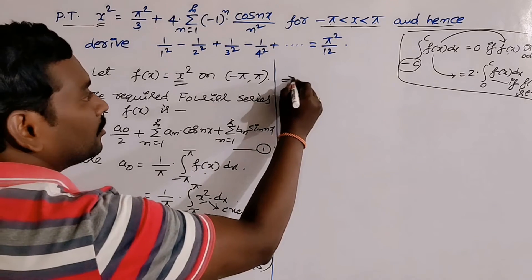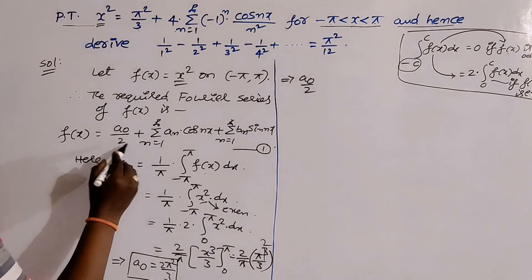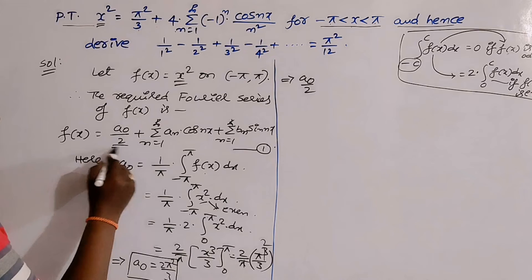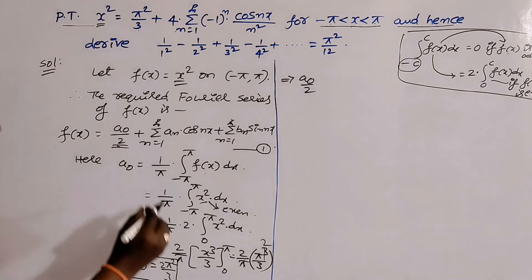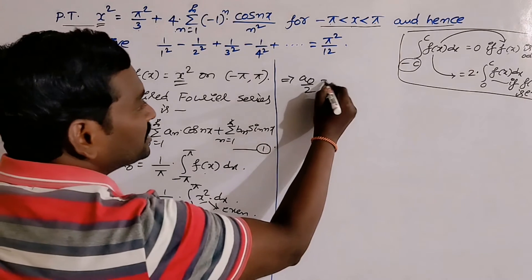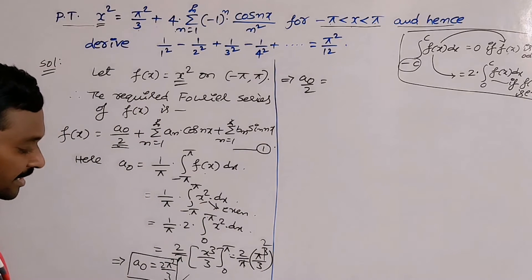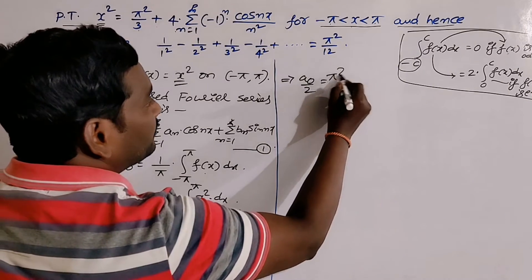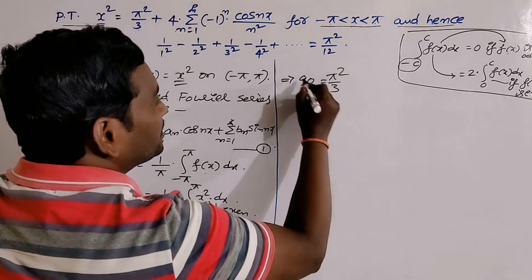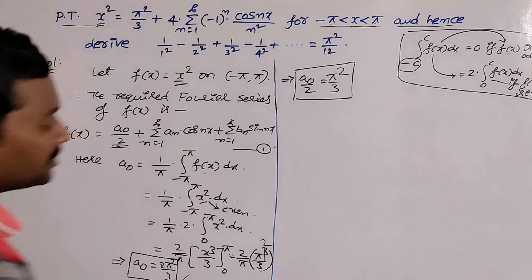From this, a₀/2 = π²/3, since the two 2s cancel. The first term in the Fourier series expansion is a₀/2, so this value is π²/3. Please highlight this value in a box.